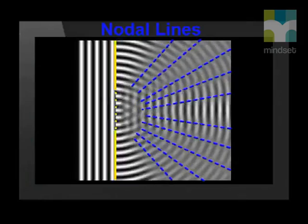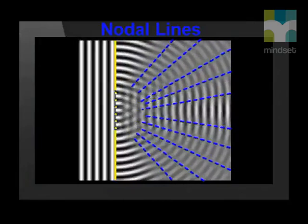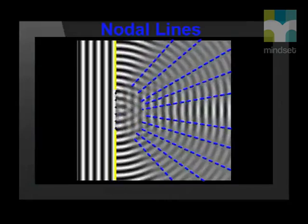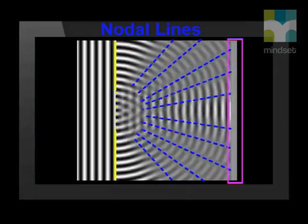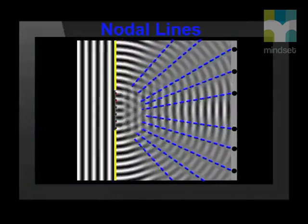Now watch this computer simulation of points in the gap making their own little waves. The circular waves interfere with each other. Can you see the nodal lines spreading out to each side of the gap? Along those lines, the wavelets interfere destructively and we get zero amplitude. The nodal lines reach the screen on the right hand side and there, at all those places, the screen will be dark.